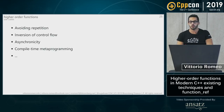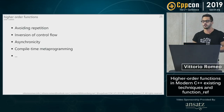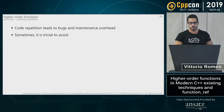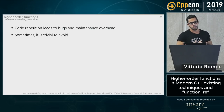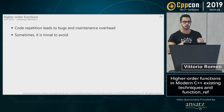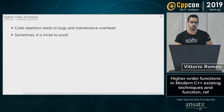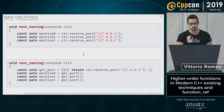The main use cases of higher-order functions are: avoiding repetition, inversion of control flow (probably the most important), asynchronicity, and compile-time metaprogramming. Regarding avoiding repetition: C++ gives us tools to avoid it from the beginning, which leads to fewer bugs and less maintenance overhead, even if some people prefer copy-pasting a few times first.